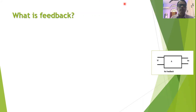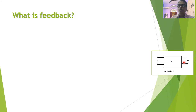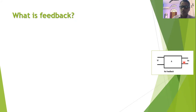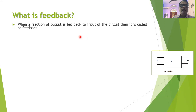Let us start the session with the question: what do we mean by feedback? Suppose we have been given an electronic circuit with an input and some output, and observe that in this circuit there is no connection between input and output. Whenever we have this situation, that is called a no-feedback situation — whenever the output is not coupled to the input, feedback is not used in the circuit. But when we connect a fraction of the output back to the input, that is called feedback.